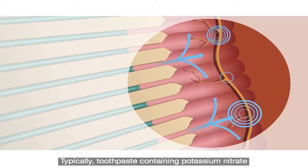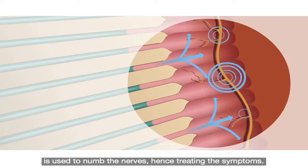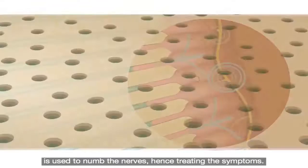Typically, toothpaste containing potassium nitrate is used to numb the nerves, hence treating the symptoms.